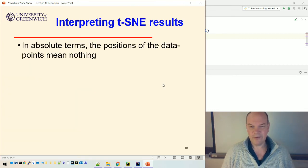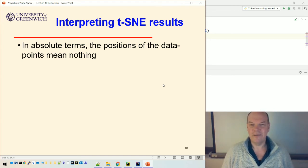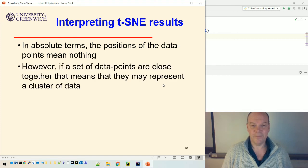So the first thing to remember or first thing to find out about t-SNE is that the positioning of these dots mean absolutely nothing. That's not what t-SNE is about. It's not about positioning them in the plane. It's about clustering essentially. And so just because two dots are positioned to the right or the left or up and down, doesn't mean anything. But if they're close together, then they may represent a cluster of data.